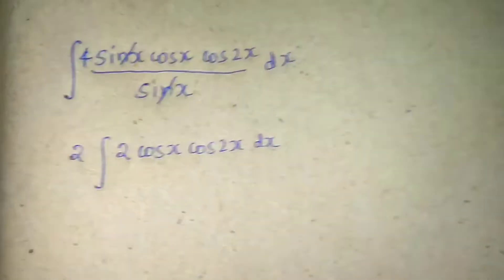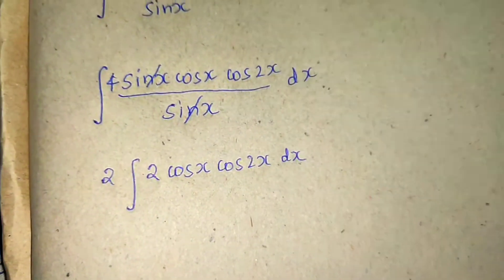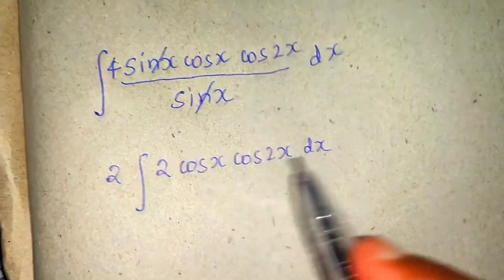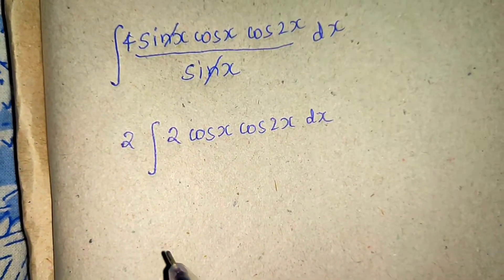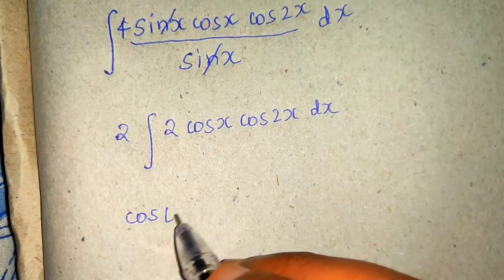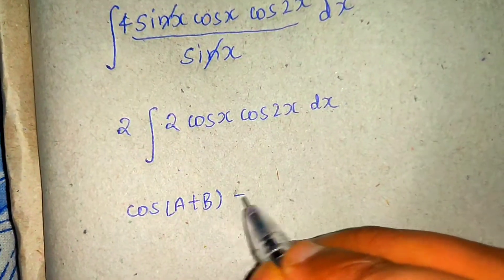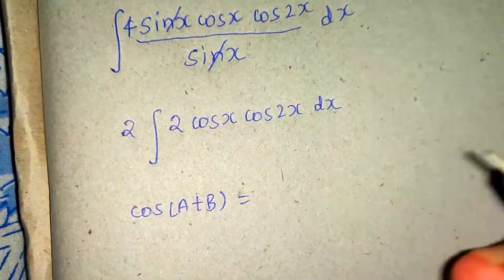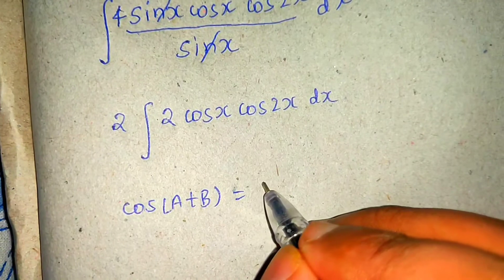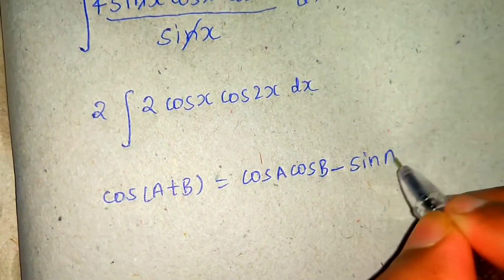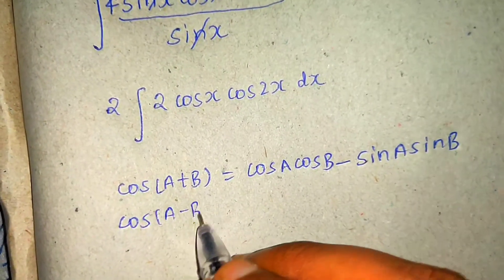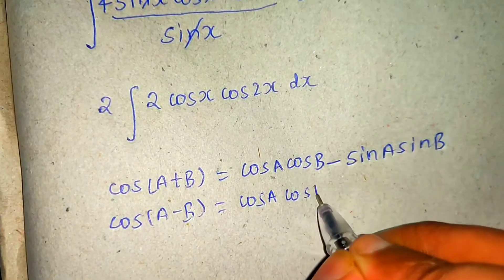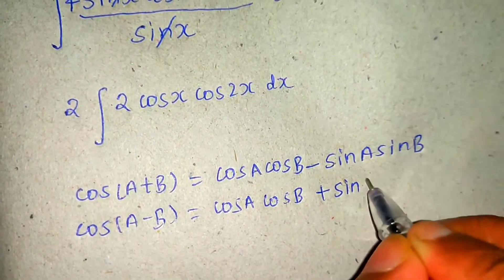Now what formula can I think of? I need a formula for 2cosA·cosB. I'll derive it: cos(A+B) = cosA·cosB − sinA·sinB, and cos(A−B) = cosA·cosB + sinA·sinB. The sinA·sinB terms cancel when added.